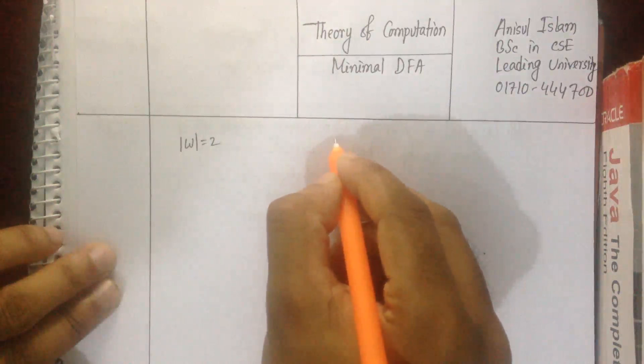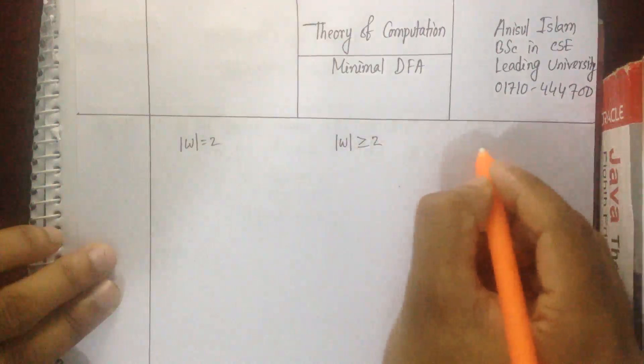I am going to get the length of string exactly 2. I am going to accept the length of string at least 2.